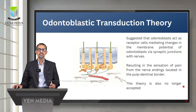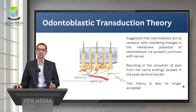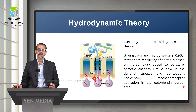The odontoblastic transduction theory suggested that odontoblasts act as receptor cells, mediating changes in the membrane potential of the odontoblasts via synaptic junctions with the nerves, resulting in the sensation of pain from the nerve endings located at the pulp-dentine border. This theory is also no longer accepted in its completeness.